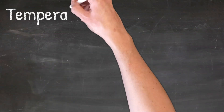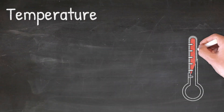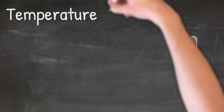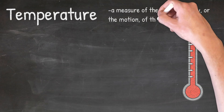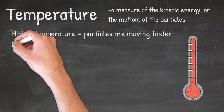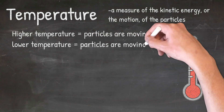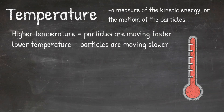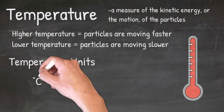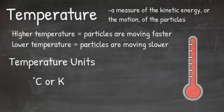When it comes to temperature, it is important to remember that temperature is not how hot or cold something is. Temperature is a measure of the kinetic energy, or the motion of the particles. Higher temperature means the particles are moving faster, and lower temperature means the particles are moving slower. If you need a refresher on temperature, make sure to check out our video. In chemistry, the units we will use for temperature will either be degrees Celsius or Kelvin. Remember, we do not use Fahrenheit in science.